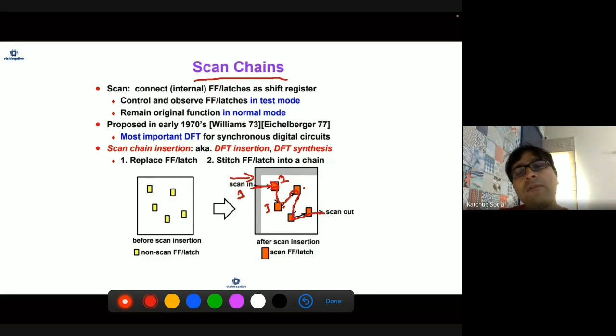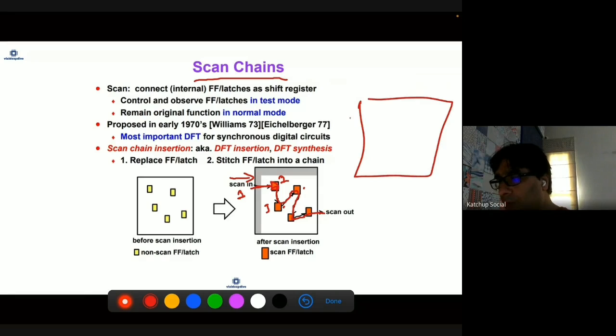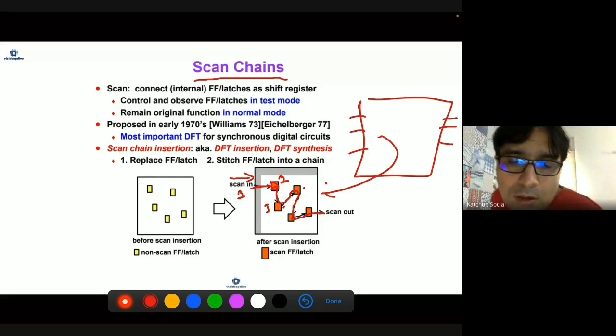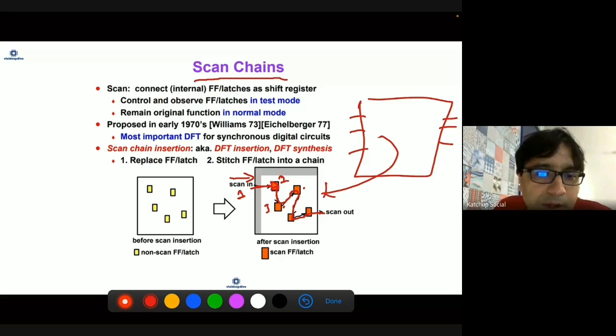Basically, you have improved your testability by a huge amount because earlier, just primary input and primary outputs were controllable or observable. But by introducing scan chains, you have made each and every flop in the design or flops that are connected to scan chains, observable and controllable.